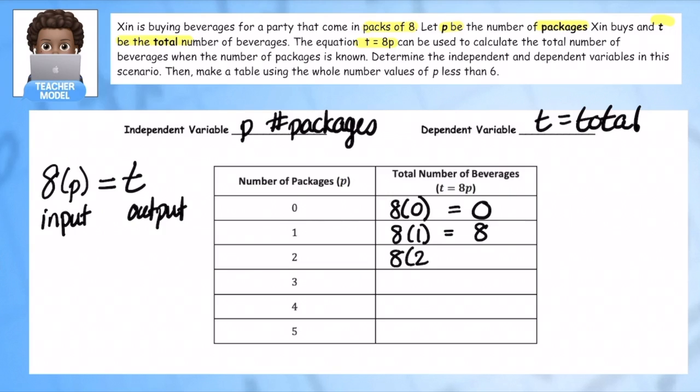When P is 2, now I have 16 beverages. When P is 3, I know I have 24. When P is 4, I have 32. And when P is 5, I have 40 beverages. So that's it.